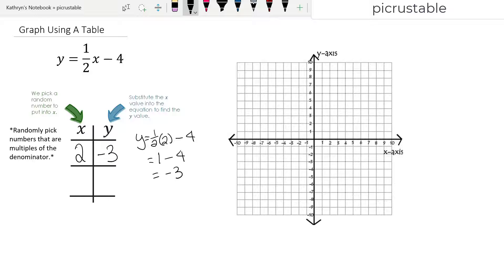Let's try another multiple of 2. How about we try negative 4? So we're going to have y equals 1 half x minus 4. I'm going to put negative 4 in for x. So 1 half times negative 4 is actually negative 2 minus 4, which is negative 6. Great. Perfect.